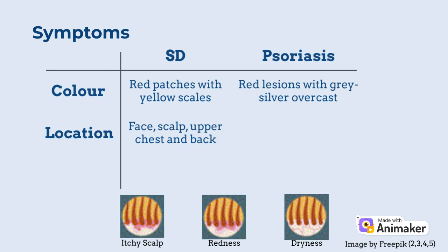When present on the face, SD is commonly found on the lips, ears, eyelids, the sides of the nose, and between the eyebrows. Similar to SD, psoriasis often affects the scalp. However, it rarely appears solely on the scalp, so you'll probably find it on other body parts like the knees, elbows, body folds, and even nails. It also typically appears with a symmetrical distribution across the body and has well-defined borders.